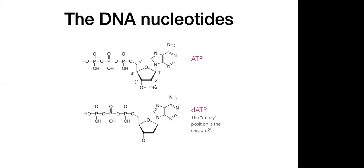In RNA you've got an OH at position 2', while in DNA there's nothing there. This doesn't prevent elongation because elongation goes from 5' to 3'. The 2' position is not really involved in DNA or RNA function — it just makes DNA more stable. RNA undergoes autocatalytic self-degradation involving that 2' carbon with its OH, so DNA is substantially more stable than RNA because of that small distinction.